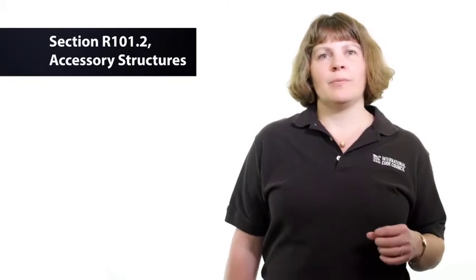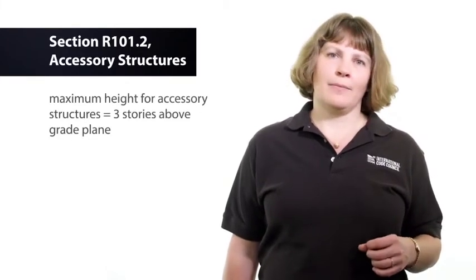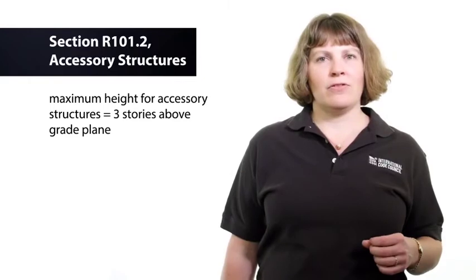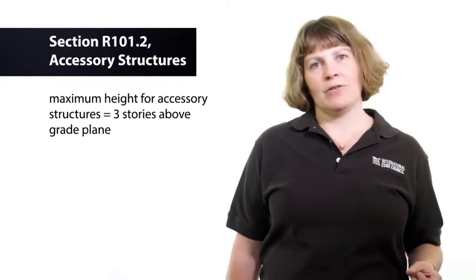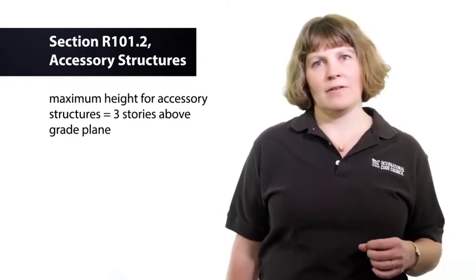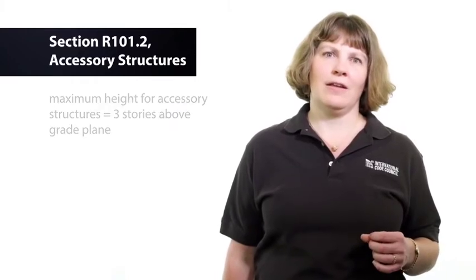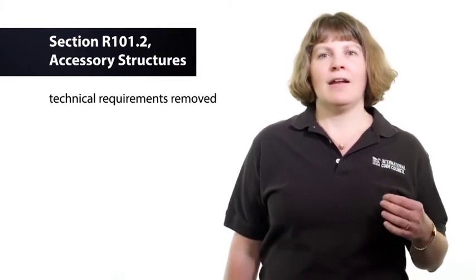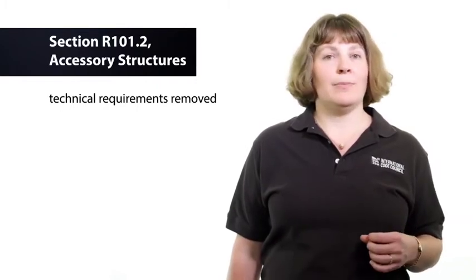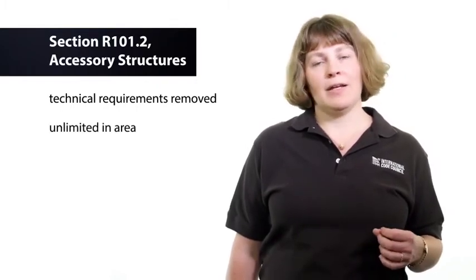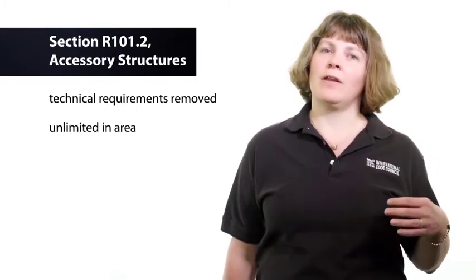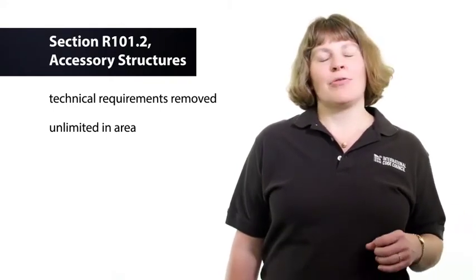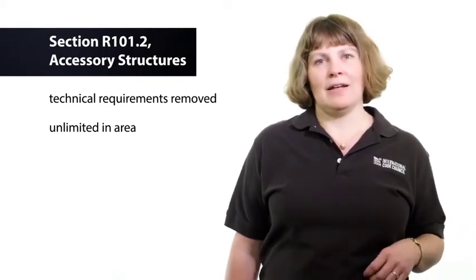Section R101.2 now states that the maximum height for accessory structures is three stories above grade plane. This is an increase from two to three stories in the 2015 IRC. Technical requirements have been removed from the definition, and accessory structures are now permitted to be unlimited in area. The limit of 3,000 square feet that existed for a few code cycles has been deleted.